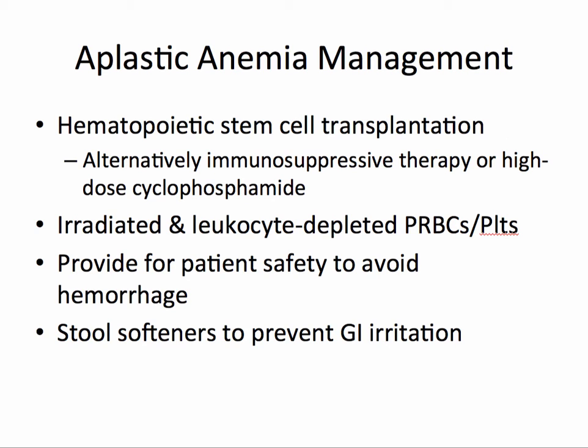The management of aplastic anemia includes hematopoietic stem cell transplantation, or alternatively patients can receive immunosuppressive therapy or high-dose cyclophosphamide. These patients may also receive irradiated and leukocyte-depleted packed red blood cells or platelets. It's important to provide patient safety to avoid hemorrhage, as this population is at risk for bleeding. Stool softeners prevent GI irritation, reducing the risk of a GI bleed.